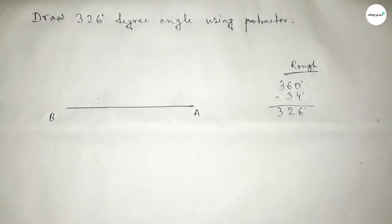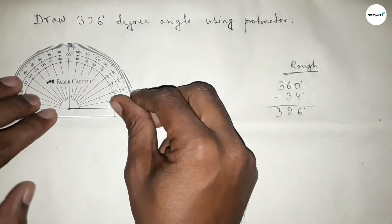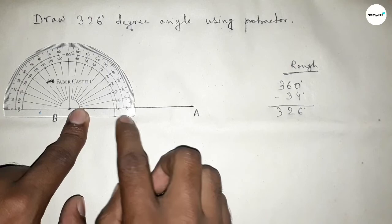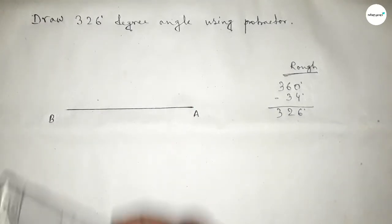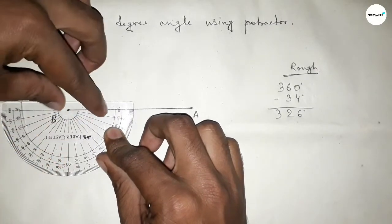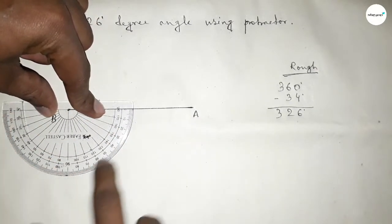Now putting the protractor on point B this way. This is 180 degrees. Plus, if we put the protractor on point B by this way and count the angle, this is total 360 degrees.